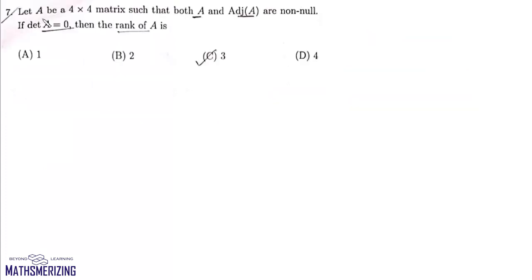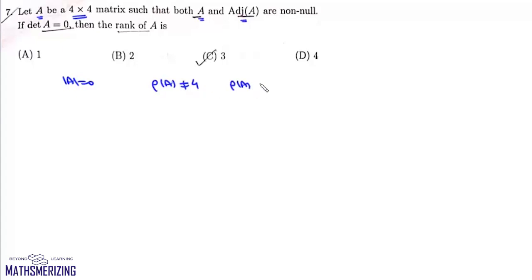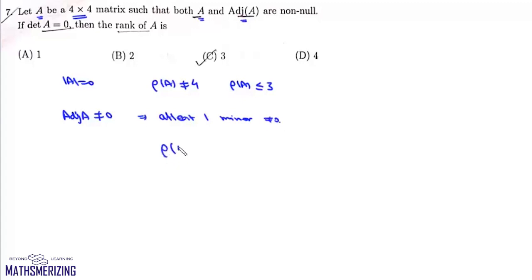Question 7: given a 4 by 4 matrix A such that both A and adjoint A are non-null matrices, and determinant of A is 0, we need to find rank of A. Since det A equals 0, rank of A cannot be 4; it should be 3 or less. Since adjoint A is not a null matrix, there exists at least one non-zero minor, which means rank of A must be exactly 3, and that's option C.